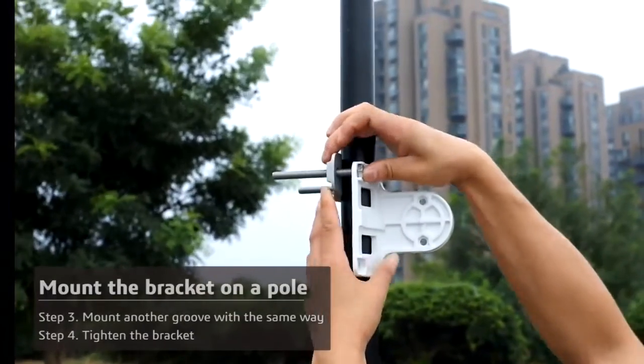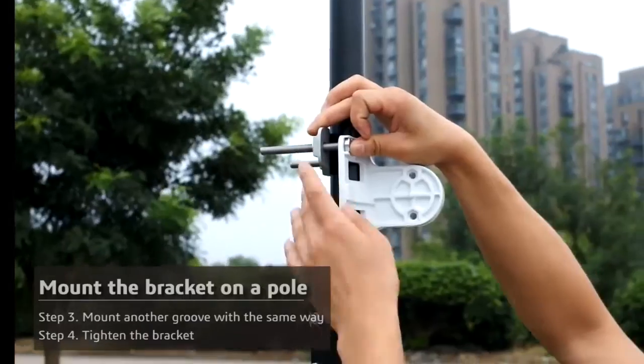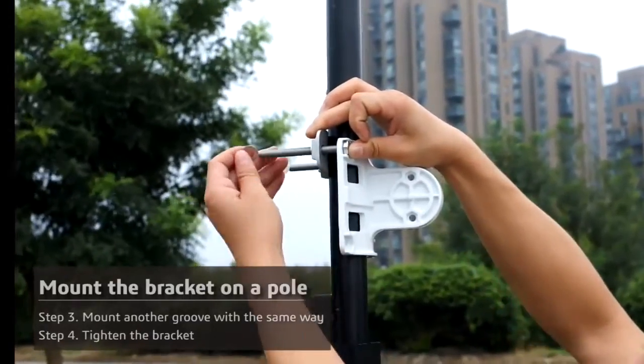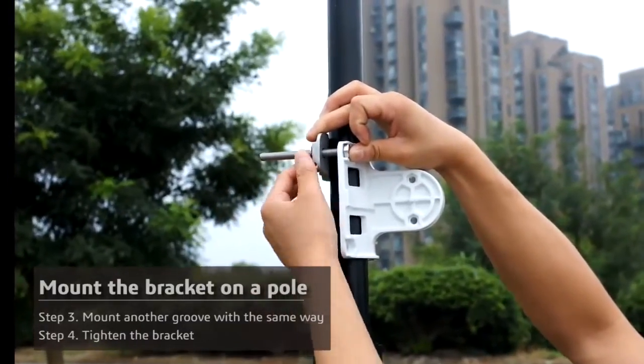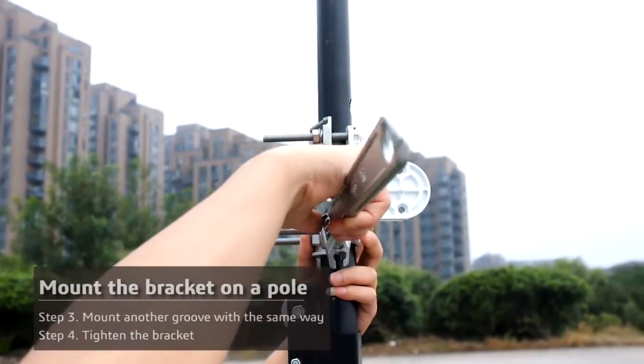Repeat this step for the other side of the bracket. And repeat these steps on the bottom bracket as well. Finally, use a wrench to tighten the lock nuts.